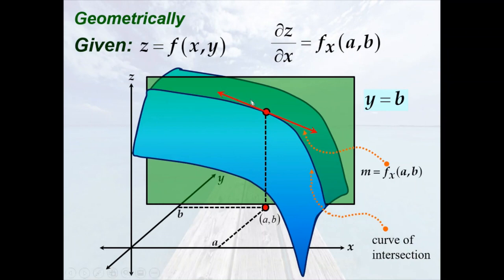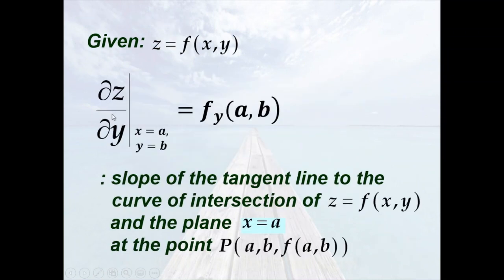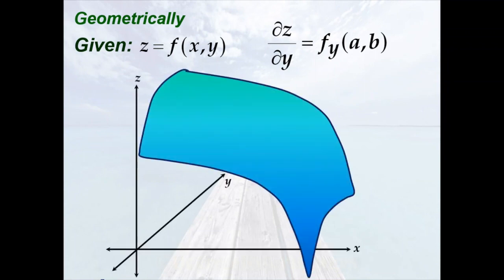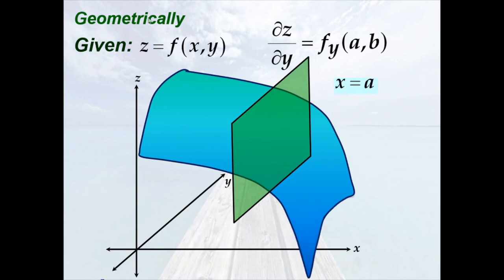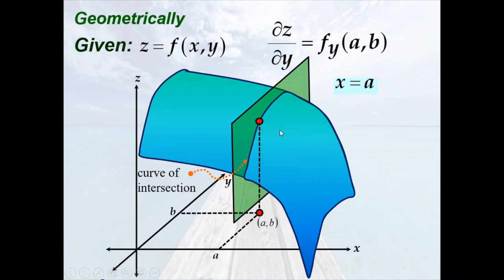We can also interpret this as the rate of change in the direction parallel to the x-axis. Similarly, getting the partial derivative of z with respect to y evaluated at x equals a and y equals b will give us the slope of the tangent line to the curve of intersection of z equals f of x, y and the plane x equals a. Symmetrically, if we have the surface f and the plane x equals a, the curve of intersection is shown, and the slope of the tangent line passing through this point is just the partial derivative of f with respect to y.